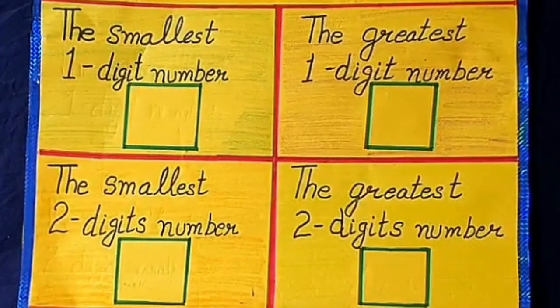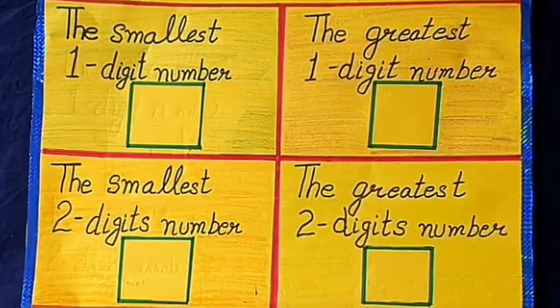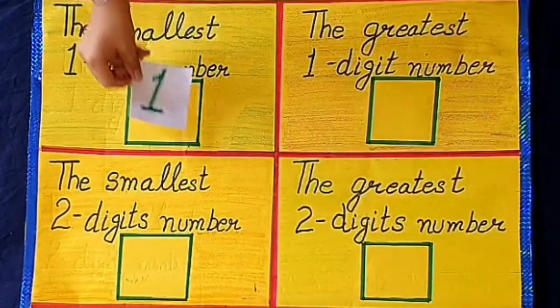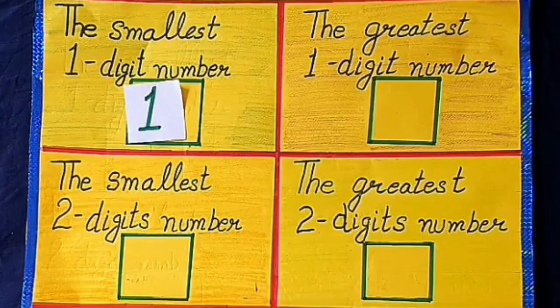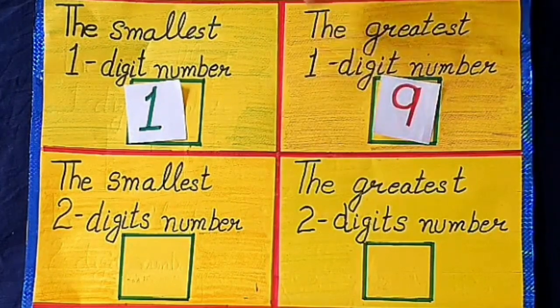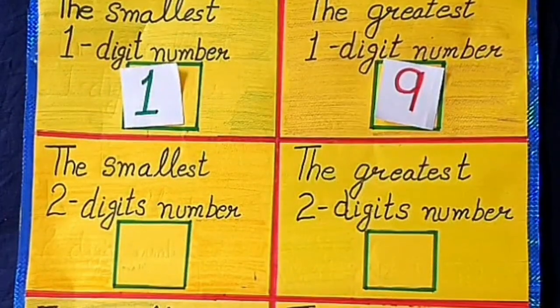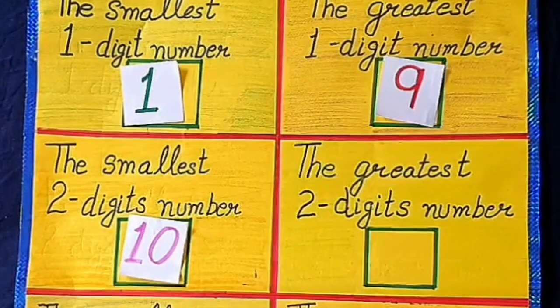Let's revise what you learned today by using abacus. The smallest one digit number is one. The greatest one digit number is nine. The smallest two digits number is ten. The greatest two digits number is ninety-nine.